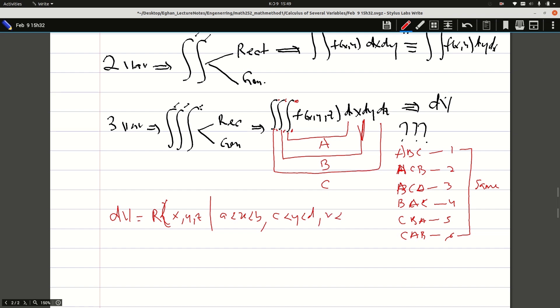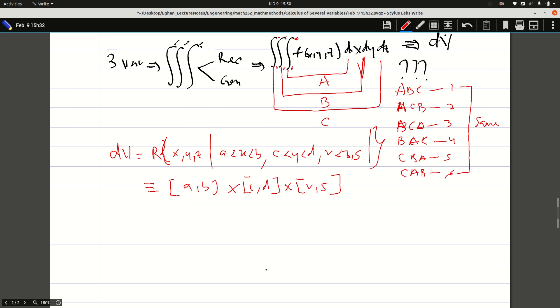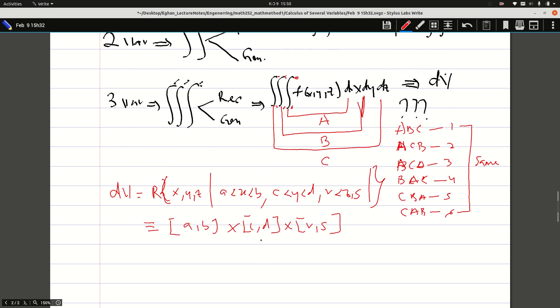I can rewrite this as [a,b] × [c,d] × [r,s]. These are equivalent for the domain specification. That's how we formalize the rectangular domain for three variables. Let's take a quick example.